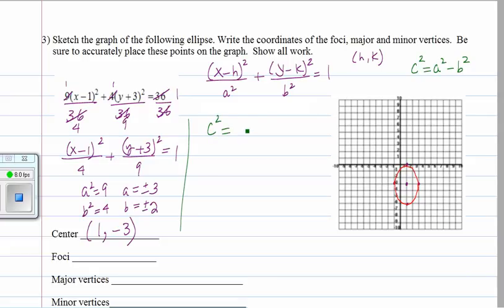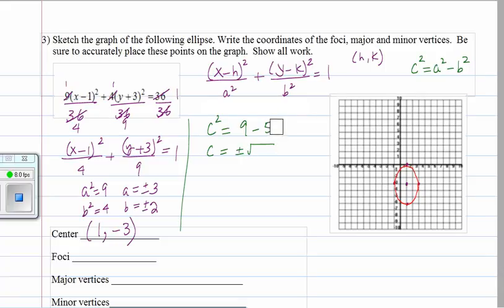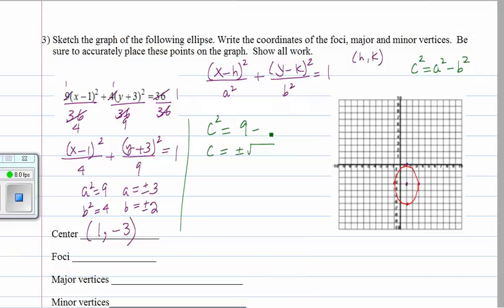So you don't want to get a negative number for c squared. Okay, so c squared is equal to 9 minus 4. So c is plus or minus root of 5.